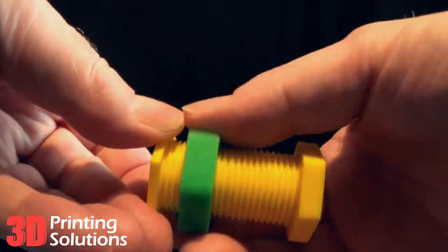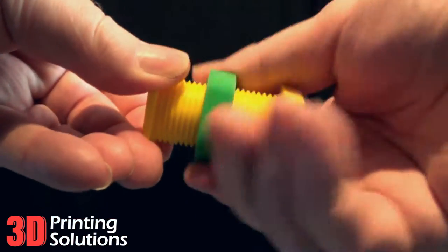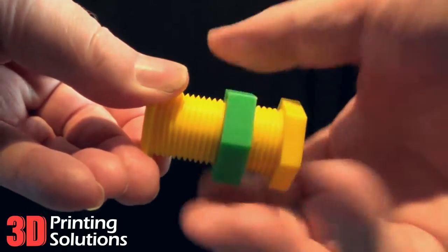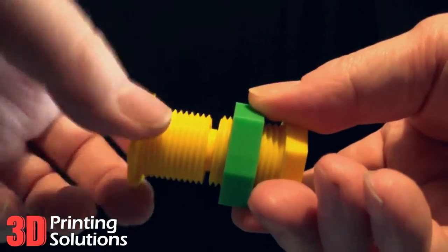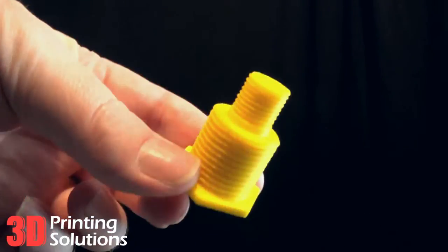To test the accuracy of the ScanMaster Plus, we decided to see if we could scan and print one of our favourite models. This is the trick nut and bolt. As you turn the end pieces of the bolt, it is revealed the bolt is printed in two pieces with the thread connecting the two.